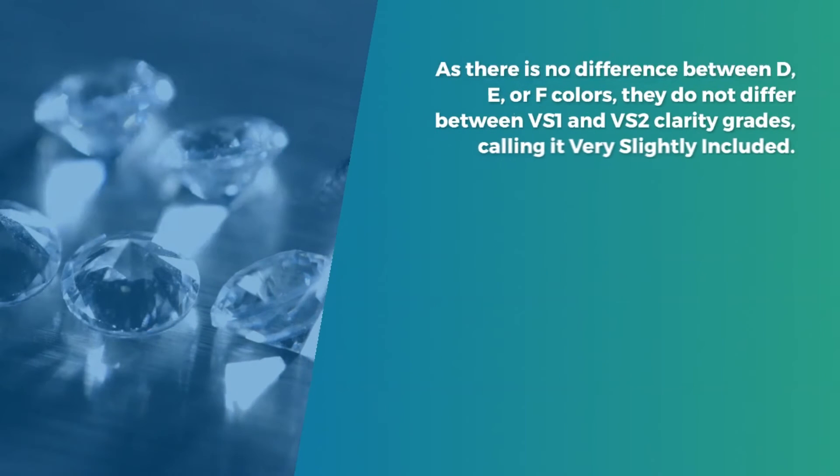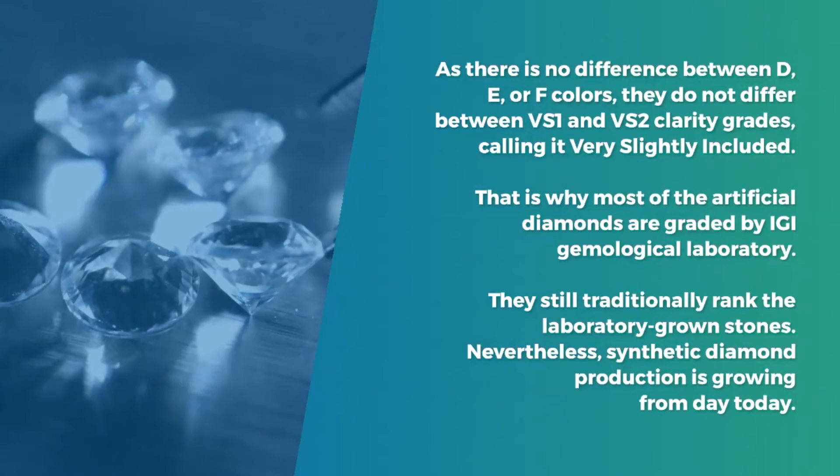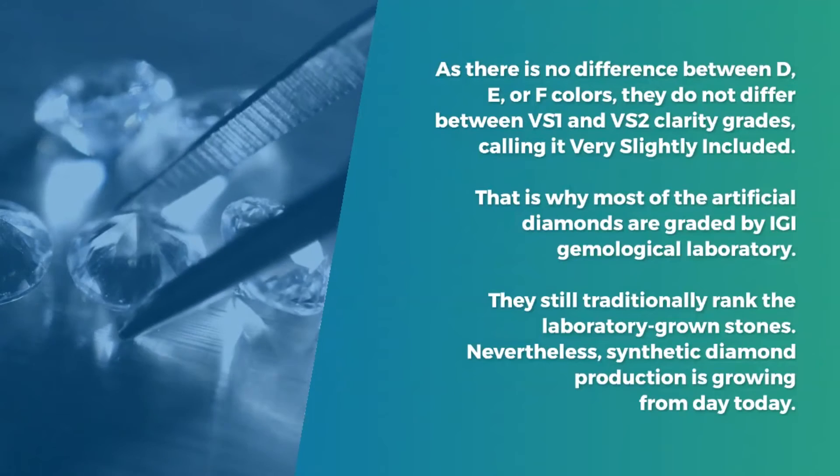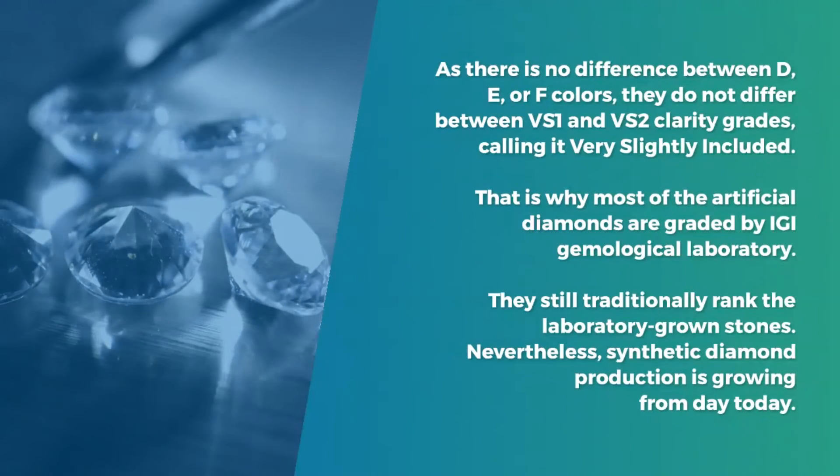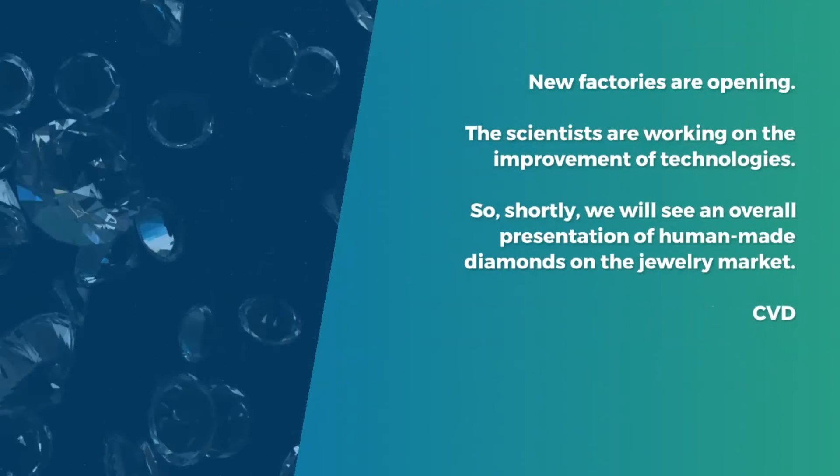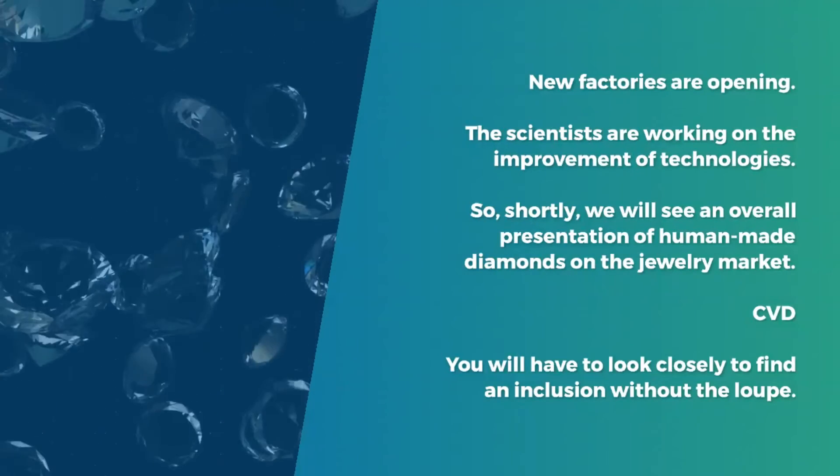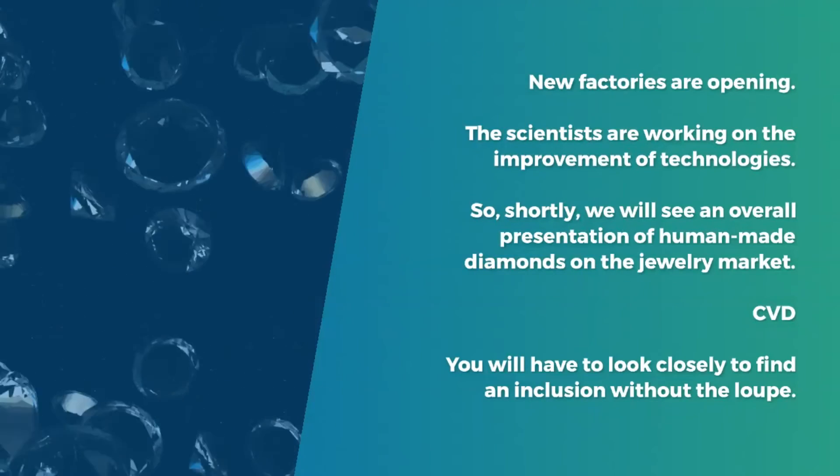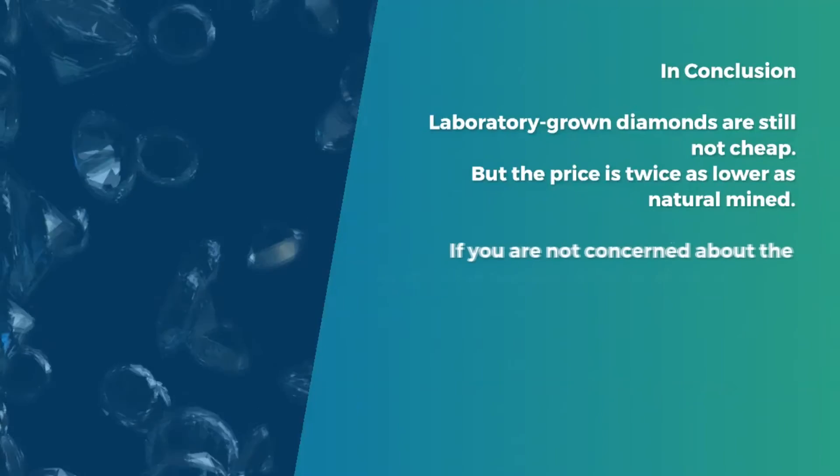This was done to prevent the possibility of comparing the earth-mined and the laboratory-grown diamond by the end buyer. For example, GIA in laboratory-grown diamond reports grades colorless instead of D, E, F colors. As there is no difference between D, E, or F colors, they do not differ between VS1 and VS2 clarity grades, calling it very slightly included. That is why most of the artificial diamonds are graded by IGI gemological laboratory. They still traditionally rank the laboratory-grown stones.